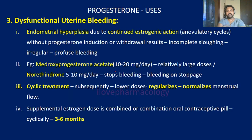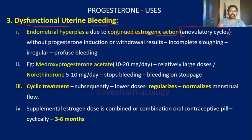The third use is that progesterone can be used in treating dysfunctional uterine bleeding. In an anovulatory cycle, continued estrogen action leads to endometrial hyperplasia. In such anovulatory cycles devoid of progesterone, induction or withdrawal can result in incomplete sloughing as well as irregular and profuse bleeding.